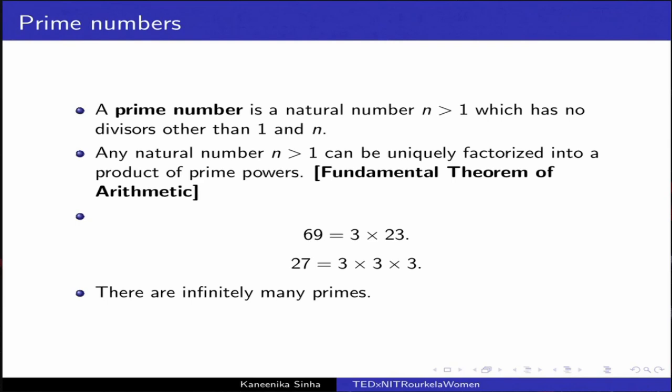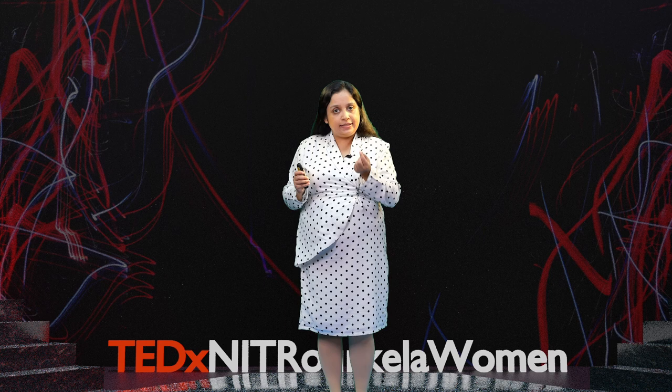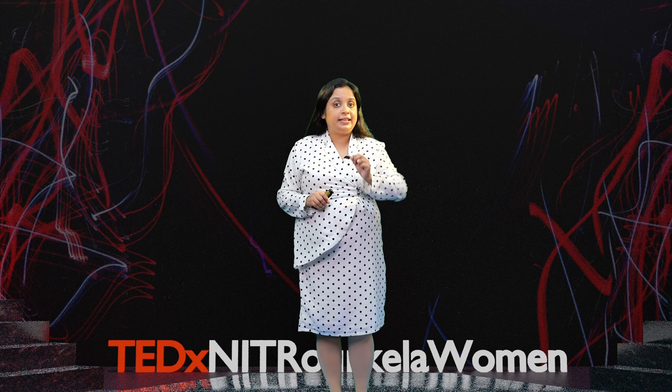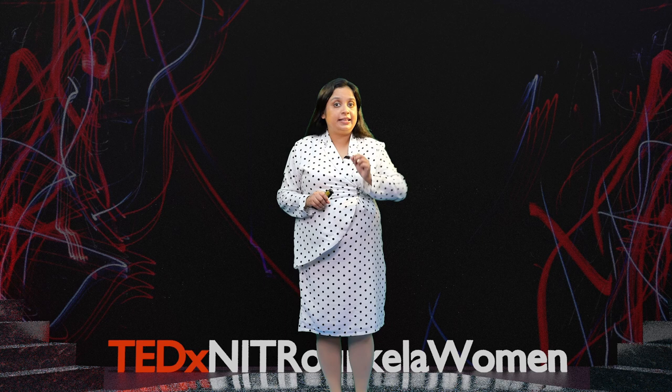A prime number, as we learned in school, is a natural number greater than 1, which has only two divisors, 1 and itself. As such, a prime number cannot be written as a product of smaller factors. Prime numbers are the building blocks of all numbers. Any number n greater than 1 is either a prime or it can be written uniquely as a product of prime numbers.